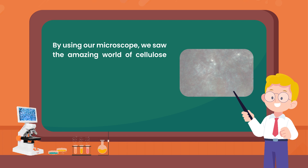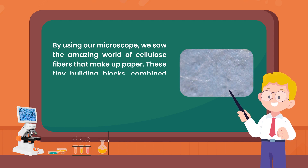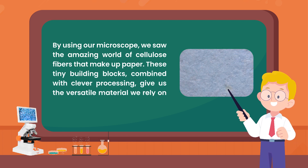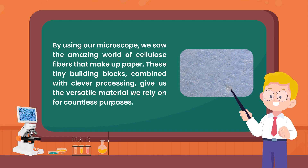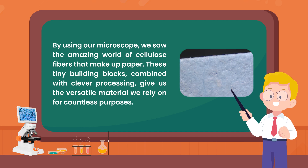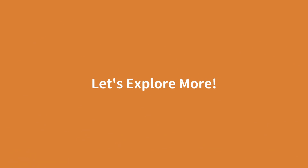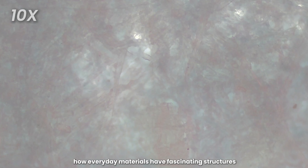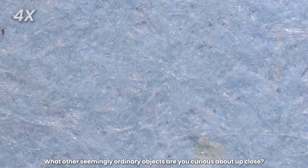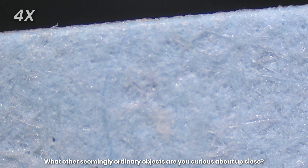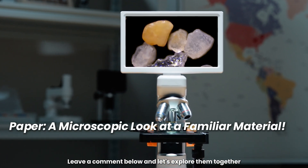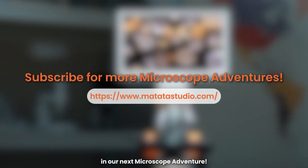By using our microscope, we saw the amazing world of cellulose fibers that make up paper. These tiny building blocks, combined with clever processing, give us the versatile material we rely on for countless purposes. Paper is just one example of how everyday materials have fascinating structures. What other seemingly ordinary objects are you curious about up close? Leave a comment below and let's explore them together in our next microscope adventure.